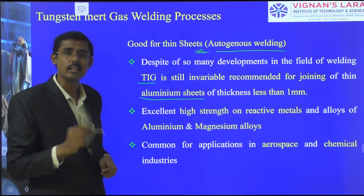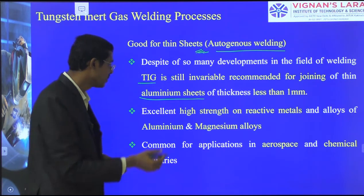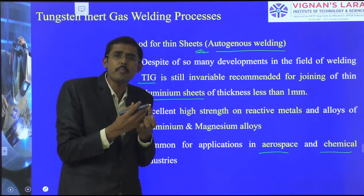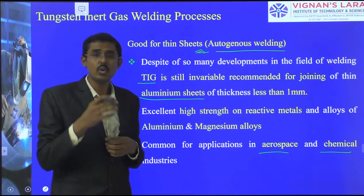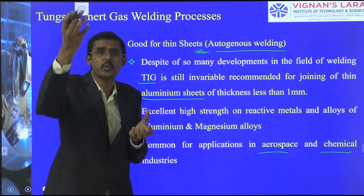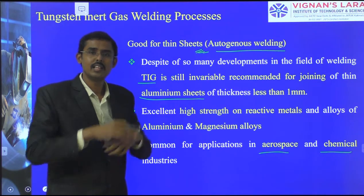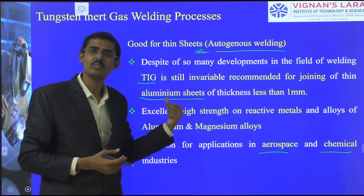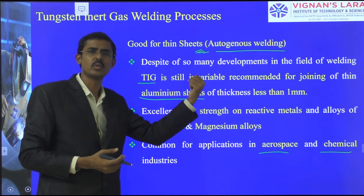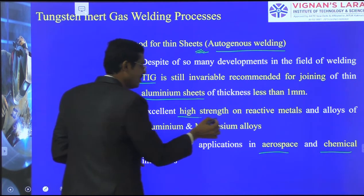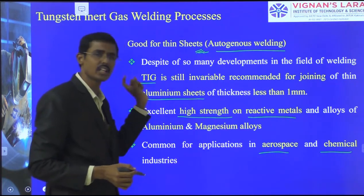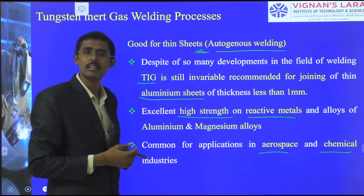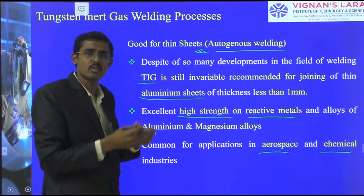Aluminium sheets are widely used in aerospace, shipbuilding, and chemical industries because of their low weight property — used in aerospace to reduce lifting load. Welding is needed in the panels of aircraft, requiring thin material welding, which makes TIG the preferred process. TIG provides excellent high strength on reactive metals. The three key needs — reactive metal protection from contamination, high strength, and thin welding — together drove the invention of the TIG process.